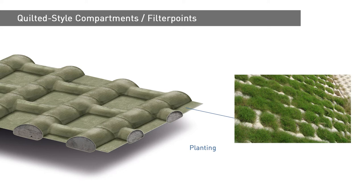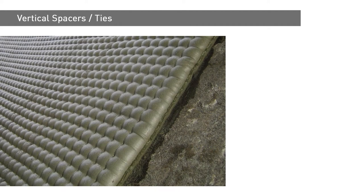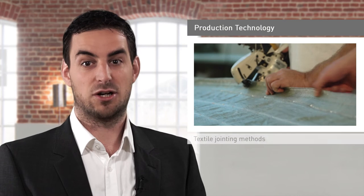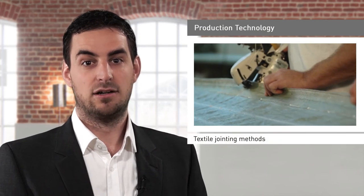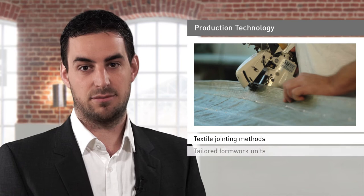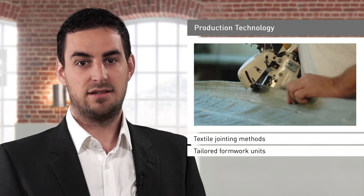With vertical spacers, it is possible to achieve a more or less constant concrete mattress cross-section. Apart from providing erosion control, the mattress can then double up as a lining element. The textile composition of the mattresses allows the application of standard textile jointing methods such as stitching and hence the fabrication of tailored formwork units.